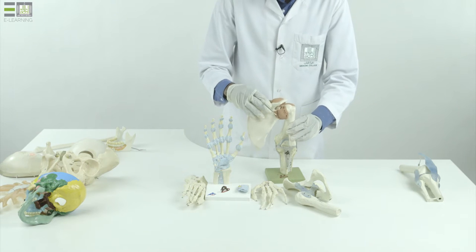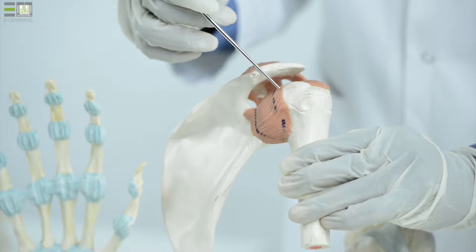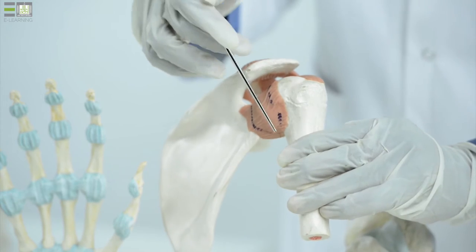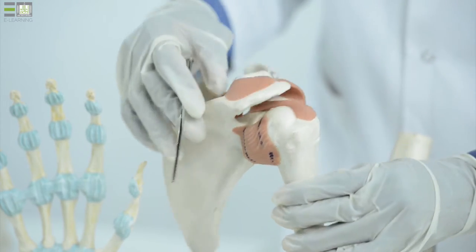They are characterized by presence of a capsule outside. This capsule is thickened in some areas to form ligaments.